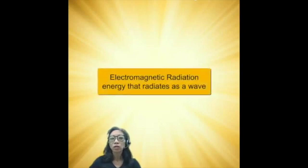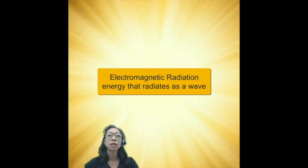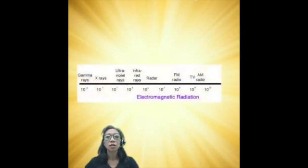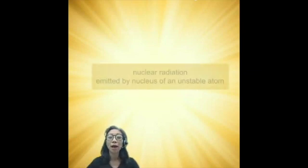Radiation is a term we use for electromagnetic radiation, which is all energy that radiates as a wave, so that's heat, light, UV, infrared, x-rays, microwaves. But in this chapter we're going to be using this term differently for nuclear radiation. So nuclear radiation is radiation that is emitted by a nucleus of an unstable atom.